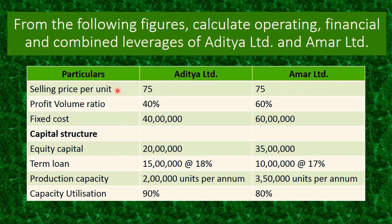What is given to us? Firstly, we know selling price per unit is 75 rupees, the same for both companies. PV ratio — what is this profit volume ratio? Profit volume ratio is nothing but your contribution, so you can use the same value for contribution.